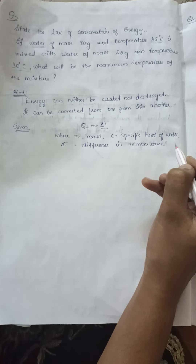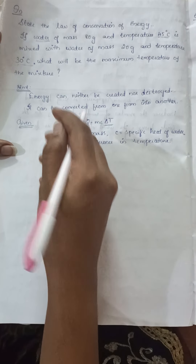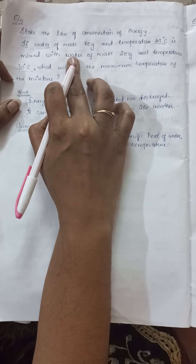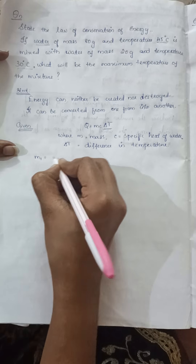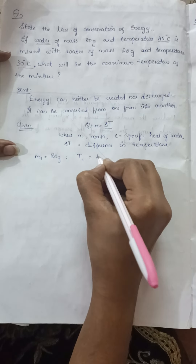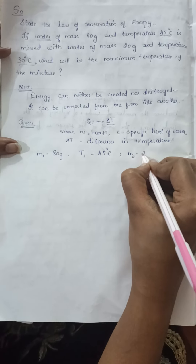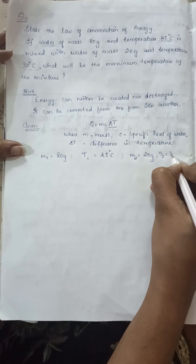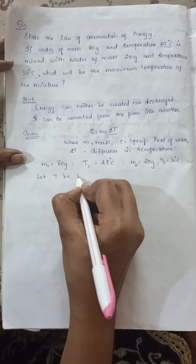Our aim is to find the maximum temperature of the mixture. Let us consider two parts: water with mass M1 equal to 80 grams at temperature T1 equal to 45 degrees Celsius, and water with mass M2 equal to 20 grams at temperature T2 equal to 30 degrees Celsius. Let T be the maximum temperature of the mixture.